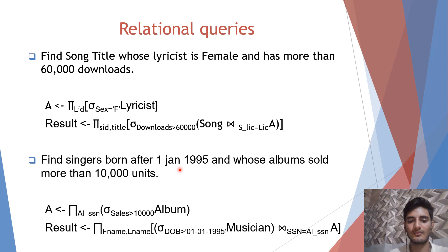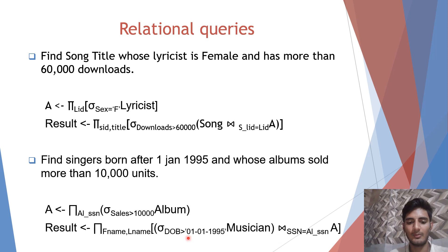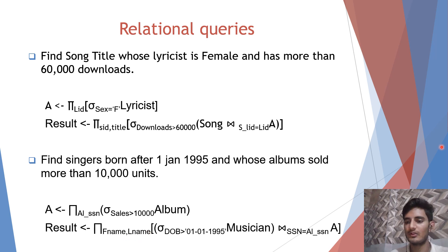The next query is: find singers born after 1 January 1995 whose album sold more than 10,000 units. First, we will be selecting albums whose sales is greater than 10,000 and projecting alssn, stored in A. Then we take all rows from the musician table where dob is greater than 1 January 1995 and join it with A wherever ssn is equal to alssn. From there we project first name and last name, stored in result.